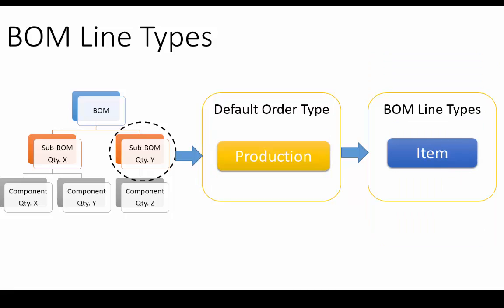Let us understand BOM line types with a couple of examples. First, if for a particular sub-BOM the default order type is set to production and the BOM line type is set to item, this means the item will be manufactured in-house. Second, if the default order type is set to production and the BOM line type is set to vendor, this means the item will be manufactured by the vendor and not in-house. We hope the concept of BOM line types is now clear. We will understand it in detail in a separate video series.